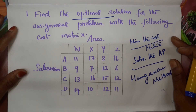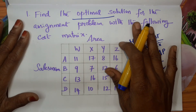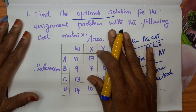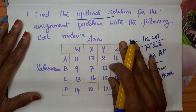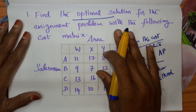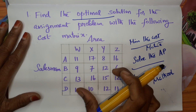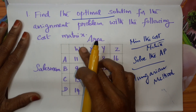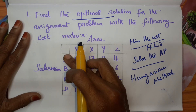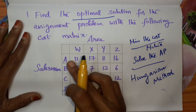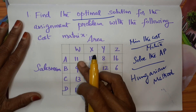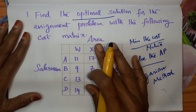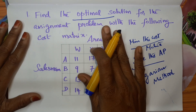The very first step is we have to check whether the given AP is a balanced AP or not. How to check? If the number of rows and number of columns are equal, the given AP is a balanced AP — the given matrix should be a square matrix. Here, 4 salesmen are given and 4 areas are given, so we can assign 1 man to 1 area. Such problems are called balanced AP, and in this problem it is a balanced AP.